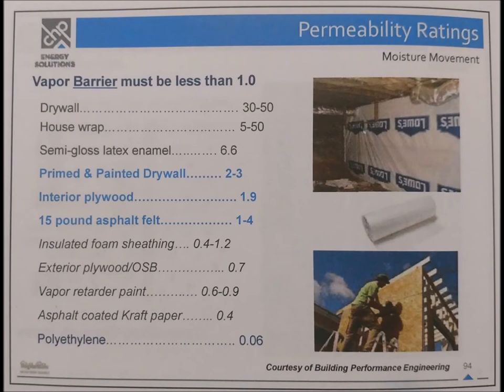Permeability ratings: Vapor barrier must be less than 1.0. Drywall is 30–50. House wrap is 5–50. Semi-gloss latex enamel is 6.6. Primed and painted drywall is 2–3. Interior plywood is 1.9. 15-pound asphalt felt is 1–4. Insulated foam sheathing is 0.4–1.2. Exterior plywood OSB is 0.7. Vapor retarder paint is 0.6–0.9. Asphalt coated craft paper is 0.4 and polyethylene is 0.06.